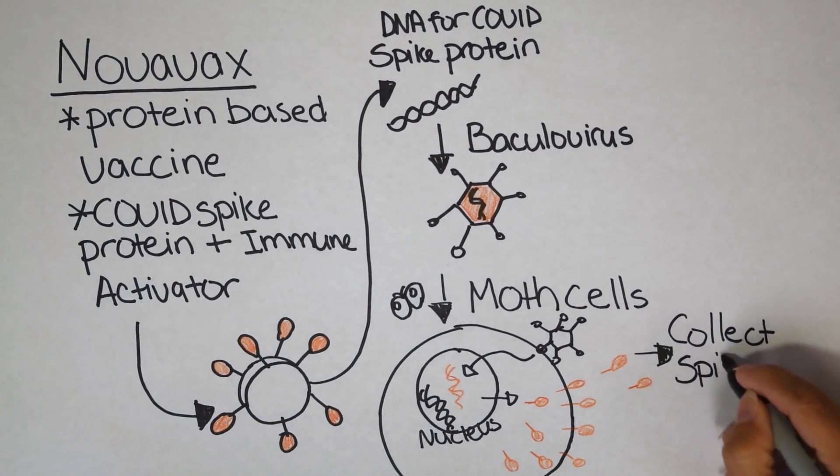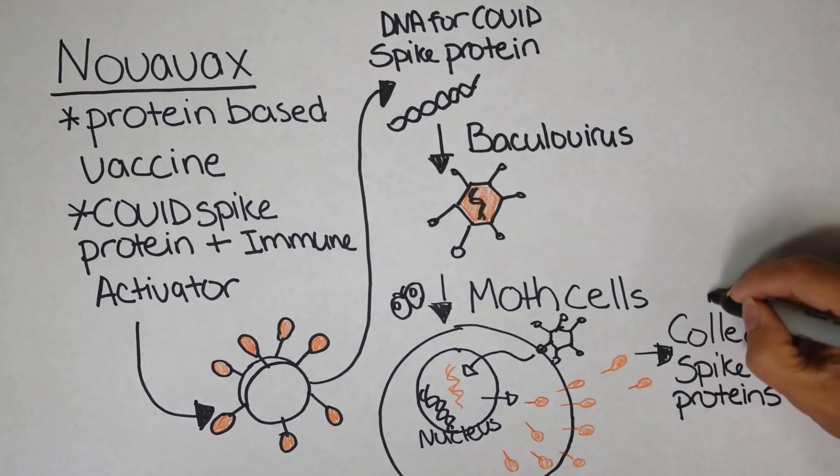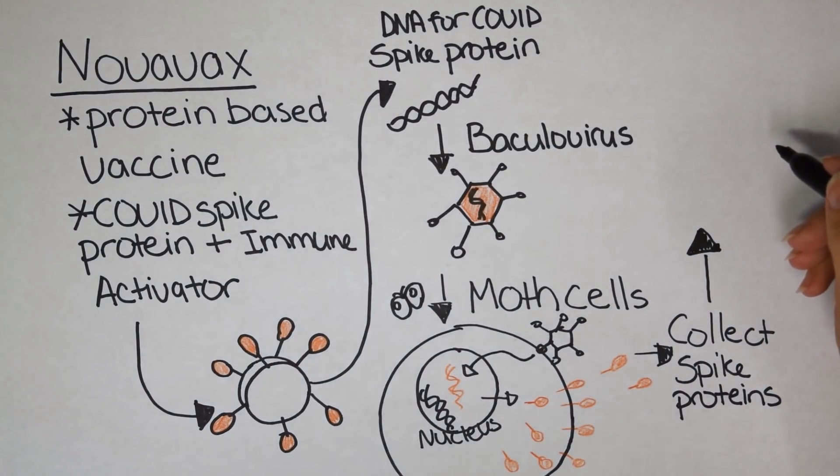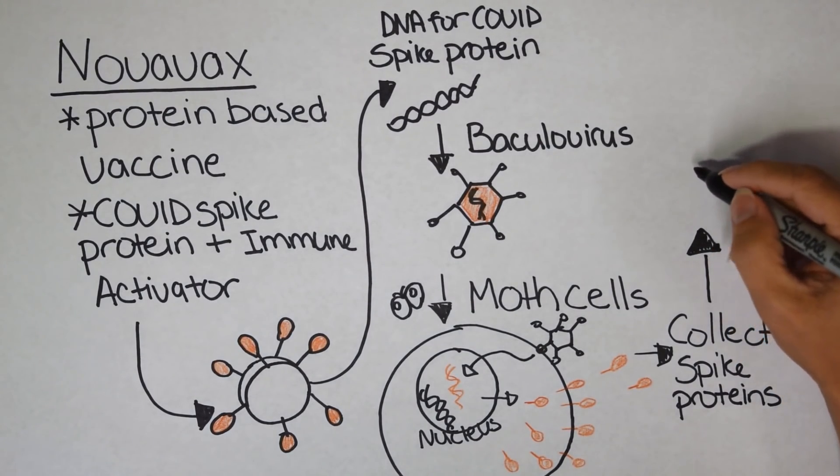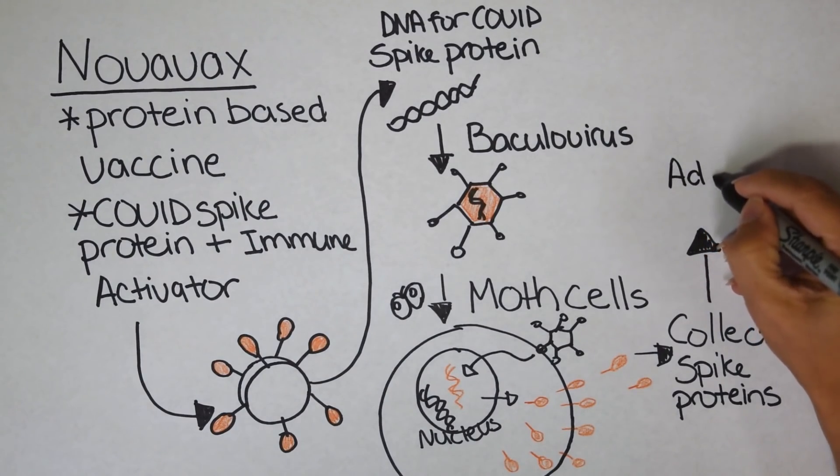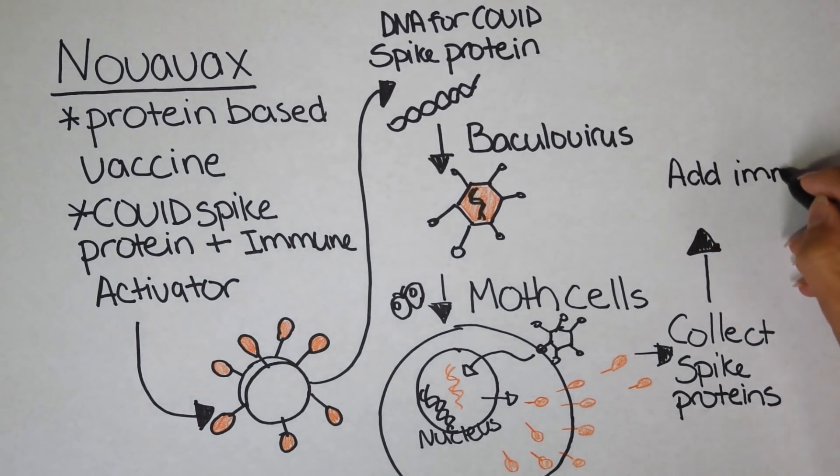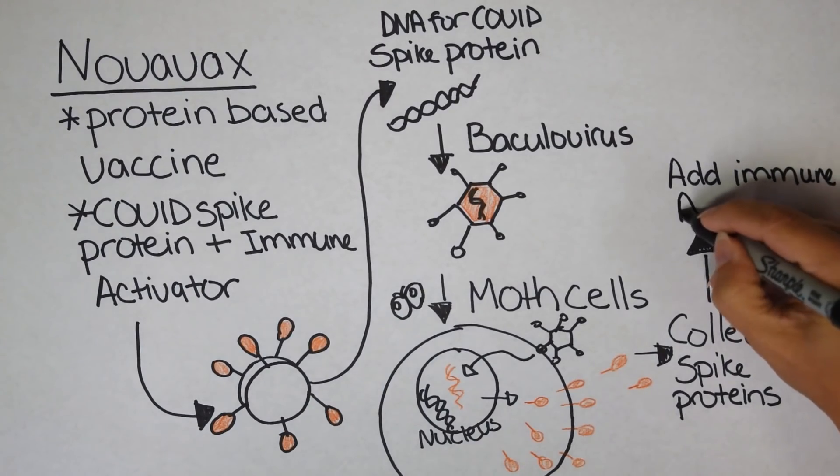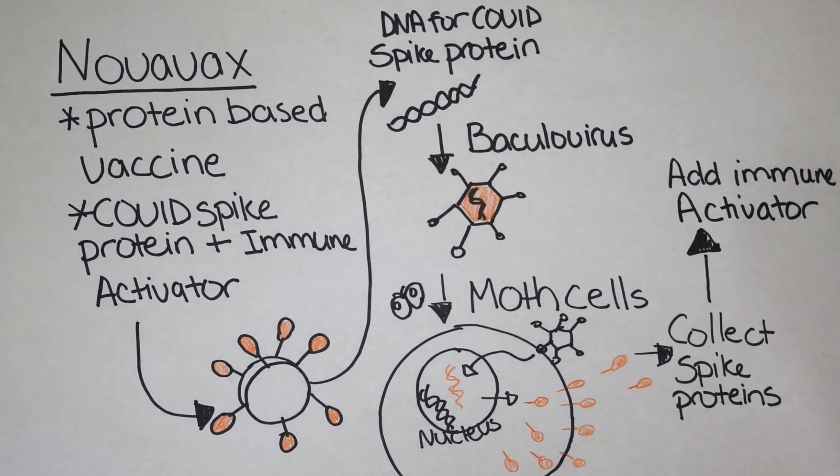And then they assemble them onto those nanoparticles that I drew for you earlier. So the only thing that you're receiving in your body are the COVID spike proteins attached to a nanoparticle in a shape that would more or less mimic a virus shape. So I mentioned the protein by itself is actually not going to activate your immune system. You need to add an immune activator.